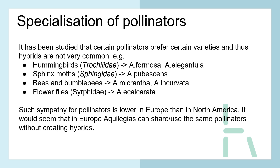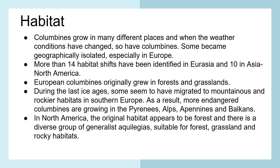Such specialization by pollinators is lower in Europe than in North America. It would seem that in Europe, Aquilegias can share or use the same pollinators without creating hybrids. Habitat. Columbines grow in many different places and when weather conditions have changed, so have Columbines. Some become geographically isolated, especially in Europe. More than 14 habitat shifts have been identified in Euro-Asia and 10 in Asia and North America.